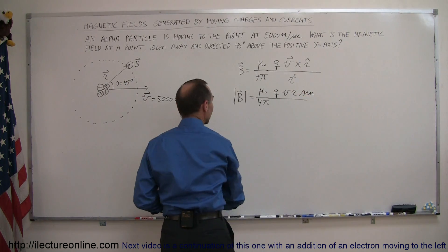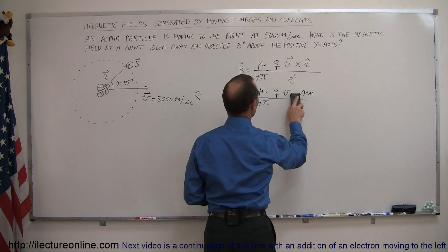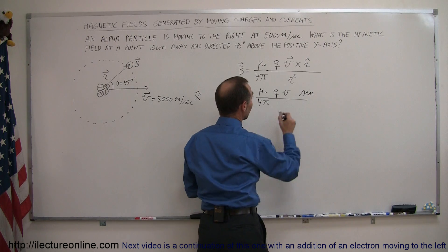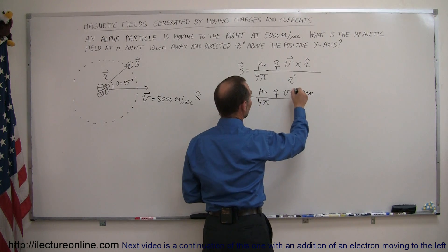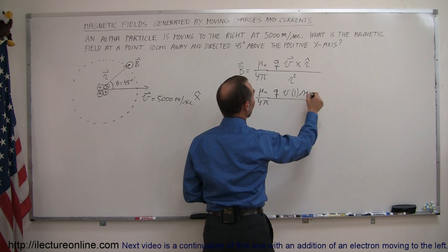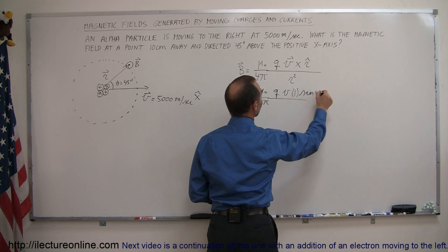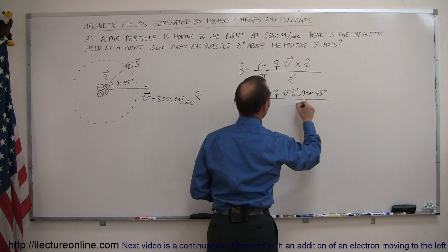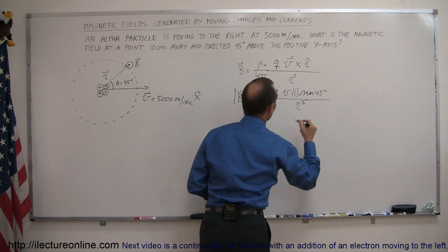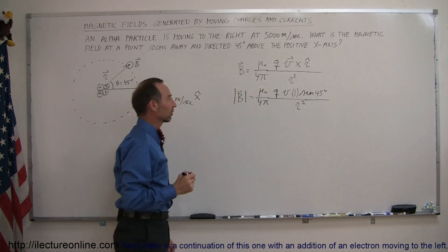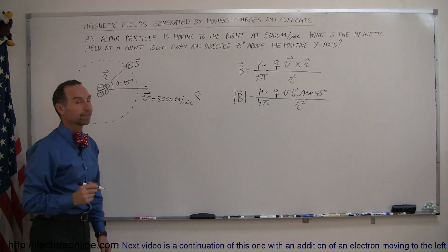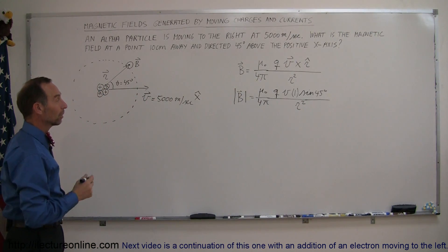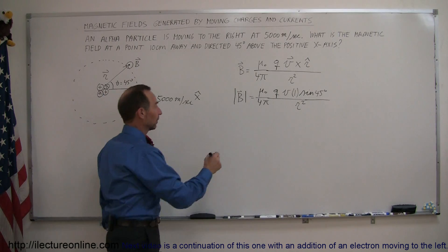Since this is the unit vector, its length is simply 1, so we have v times 1 times the sine of 45 degrees, divided by the length of the position vector squared. Now we can go ahead and plug in the values.